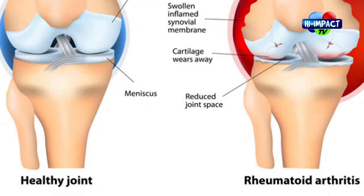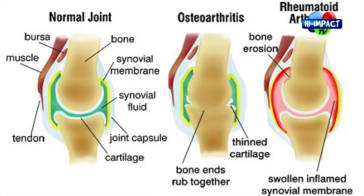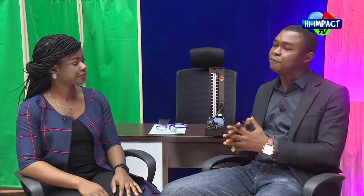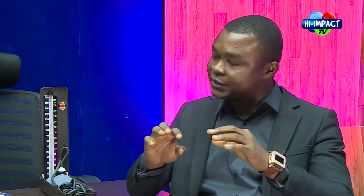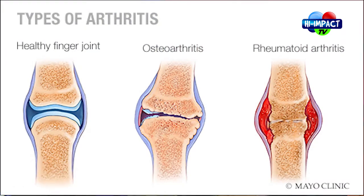Osteoarthritis is basically a chronic degenerative condition whereby there's a degradation of the articular surface. The bones have a particular cushioning layer we call the articular cartilage, which helps cushion the effect of movement. But over time, because of overweight or overuse, it keeps reducing. The smoothness of the articular cartilage reduces, and that's where you start having a grinding effect and friction. So instead of smooth movement, when you move the joint you hear a sound — we call that crepitus — and that symbolizes that there's a problem going on in that joint.